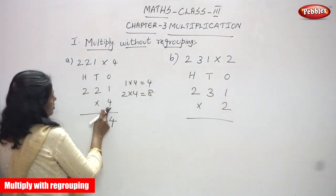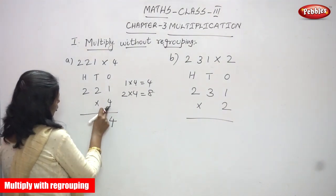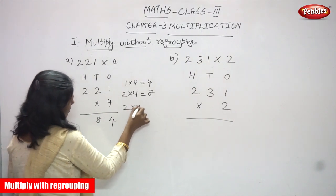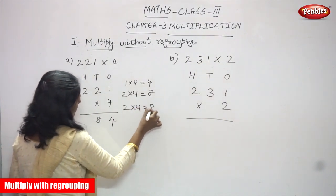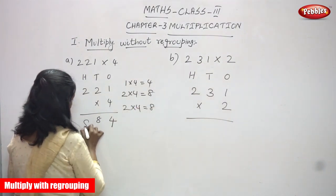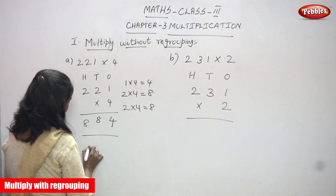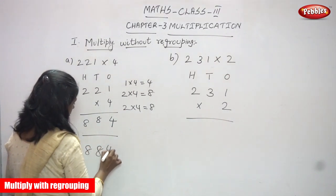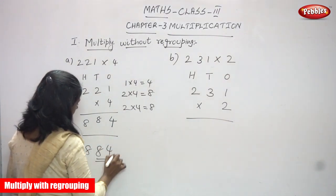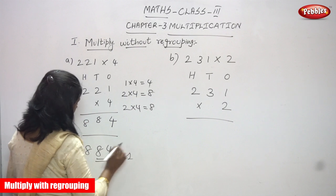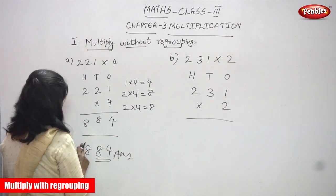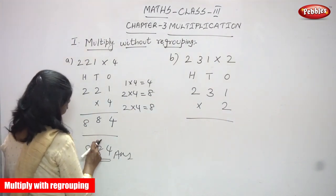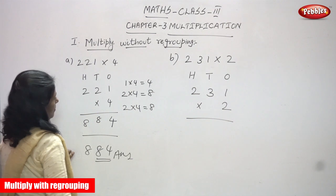Next, two into four again — that is eight hundreds. So the answer is eight hundreds, eight tens, and four ones — that is 884.